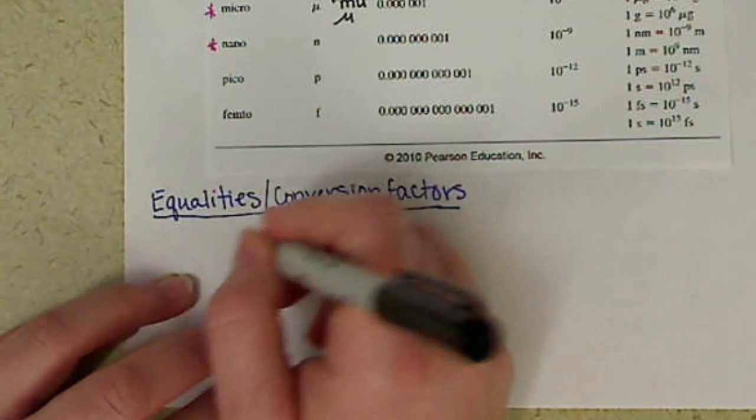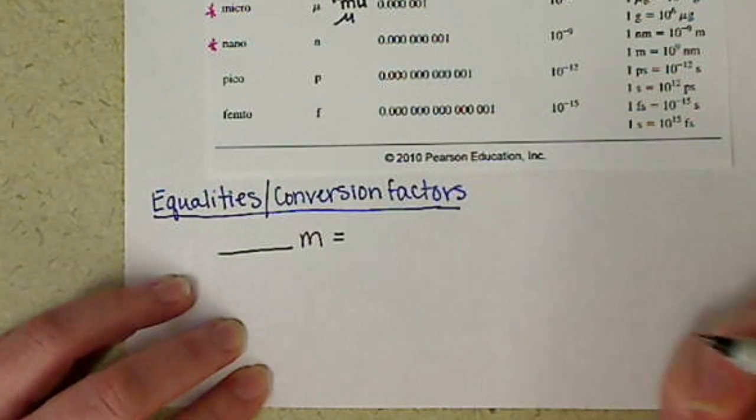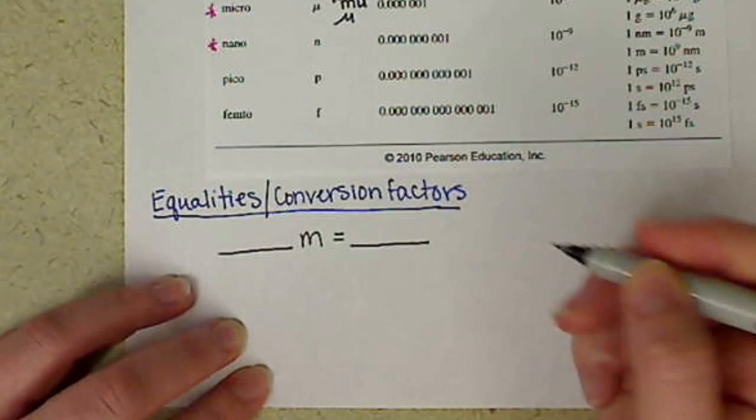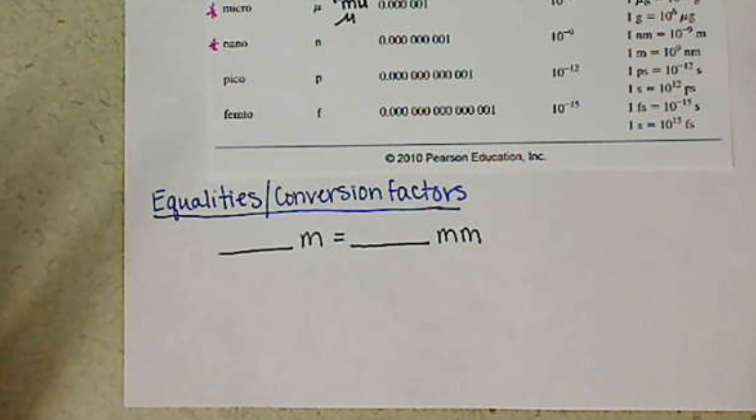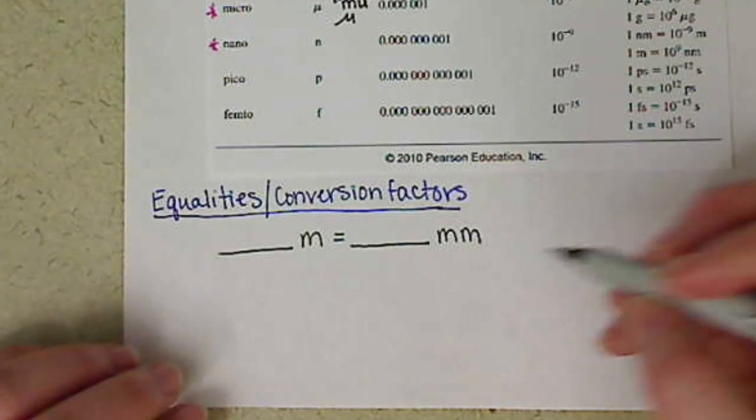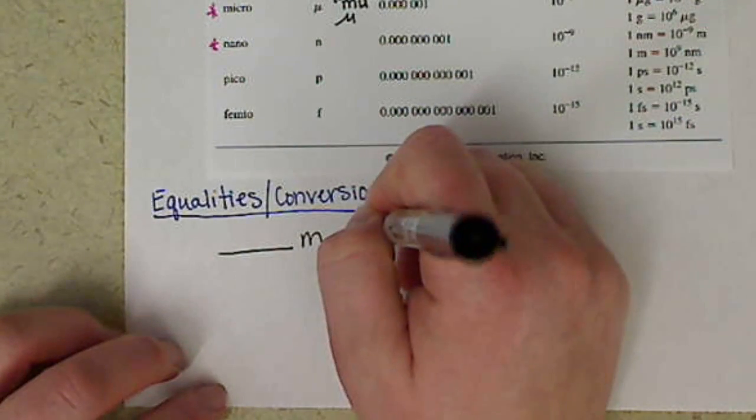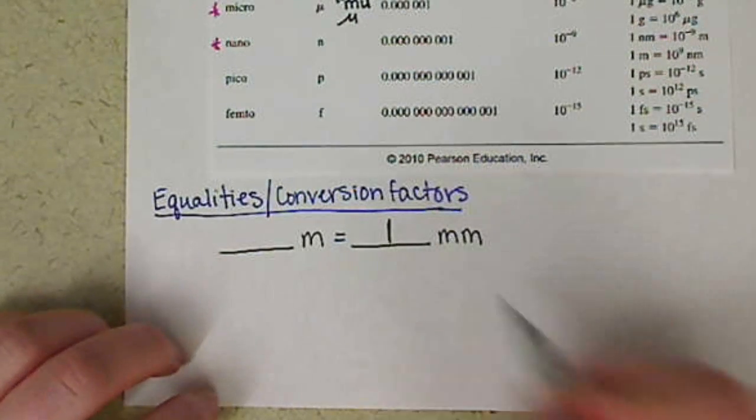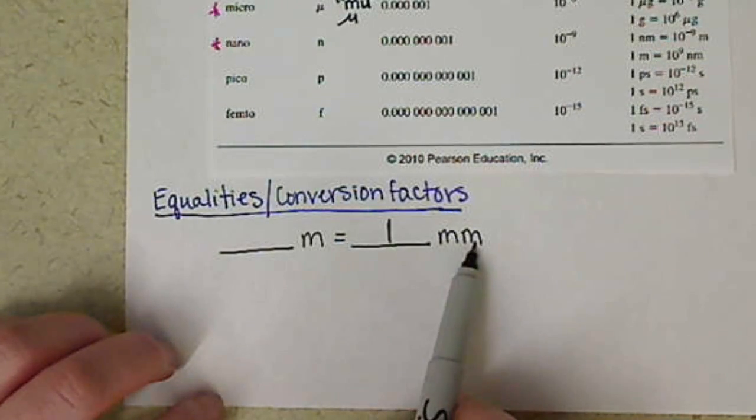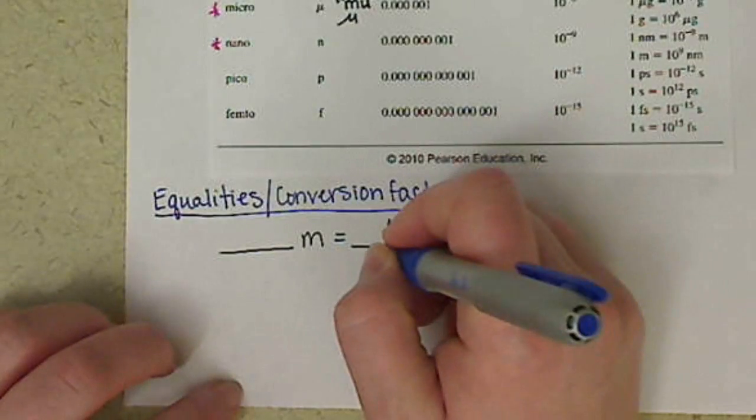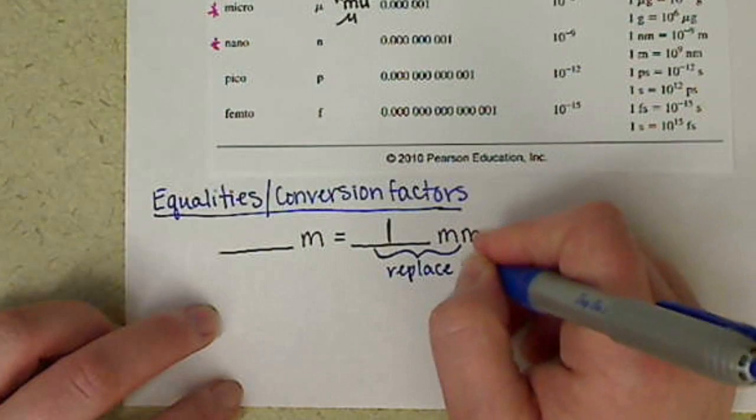So if we want to look at an equality here, and we want to look at the equality between meters, our base unit of length, and say millimeters, there are a couple different ways for you to do this. But what I suggest is that whenever you're filling in an equality for the metric system, you're always going to put the one with the prefix. And then what we're going to do in order to figure out how many meters are in one millimeter is we're going to replace the prefix with its value.